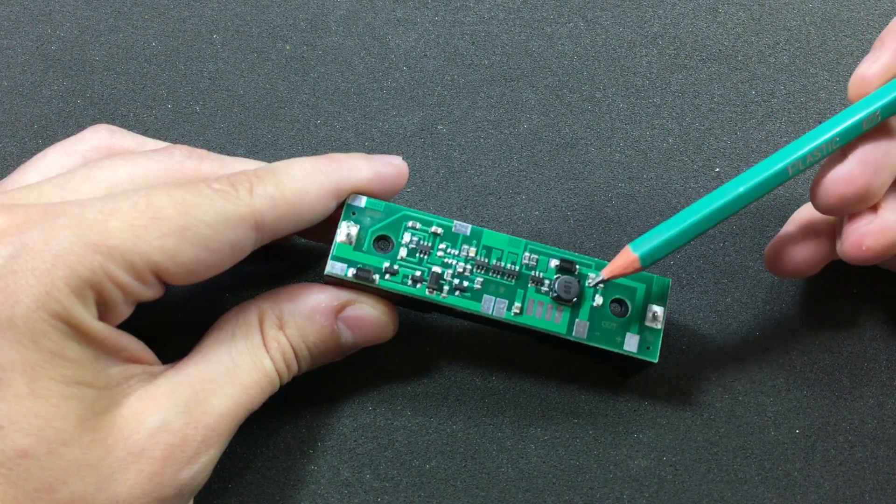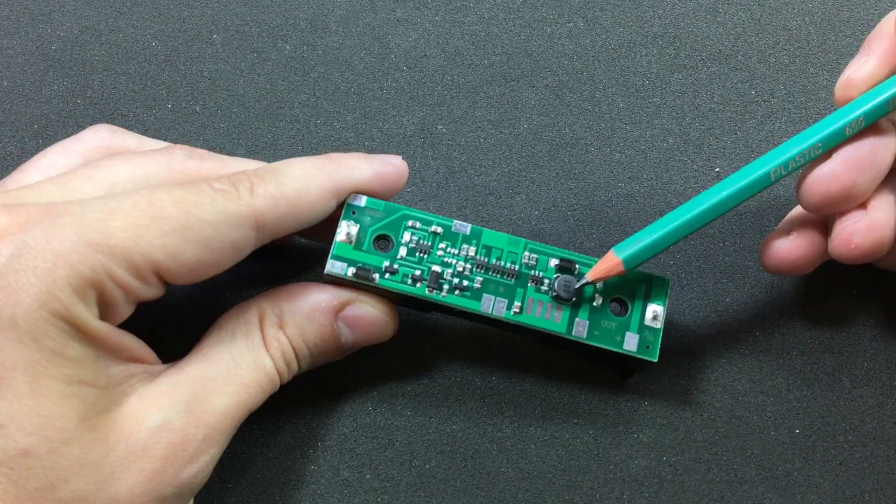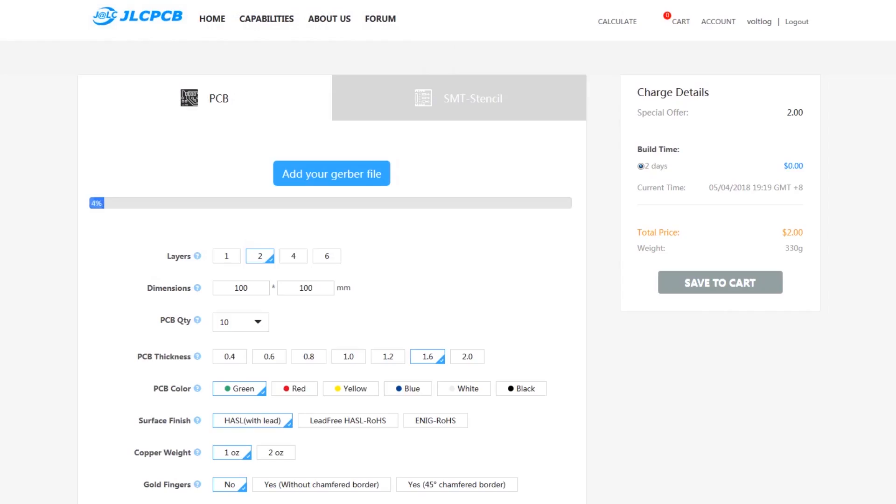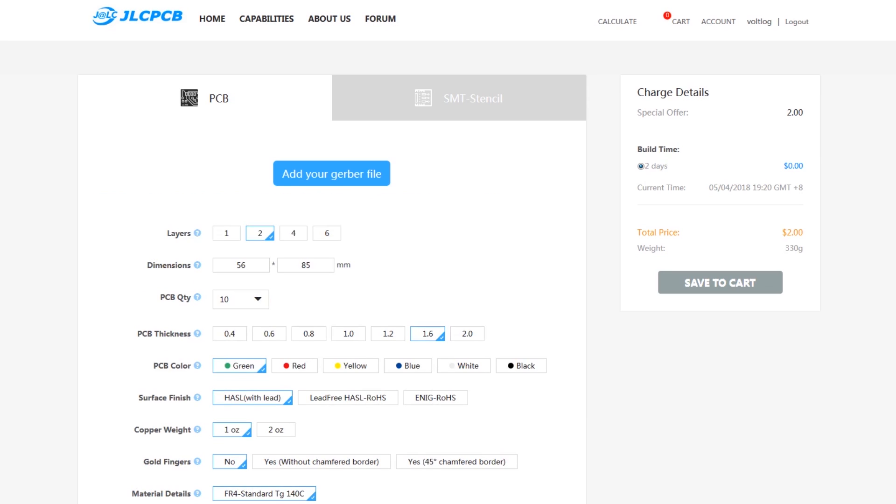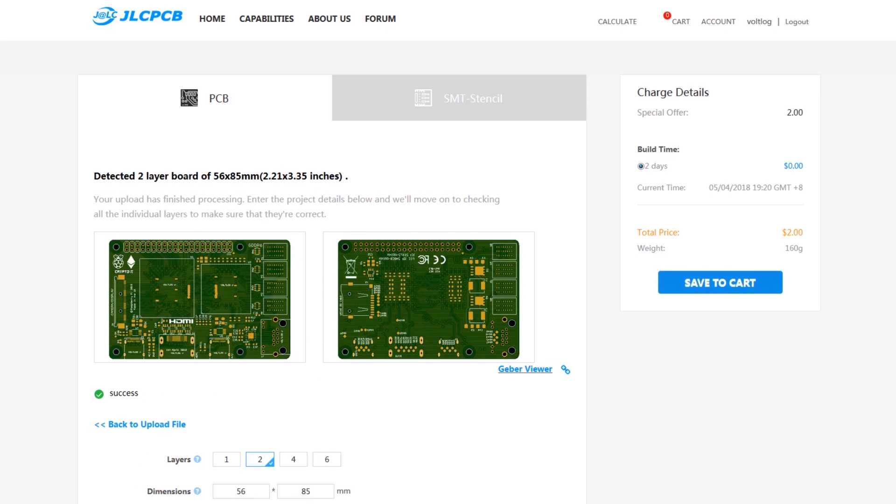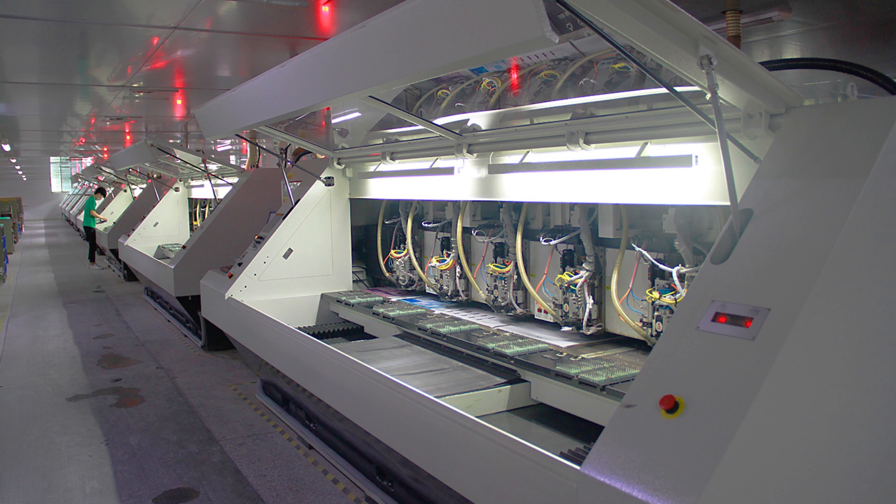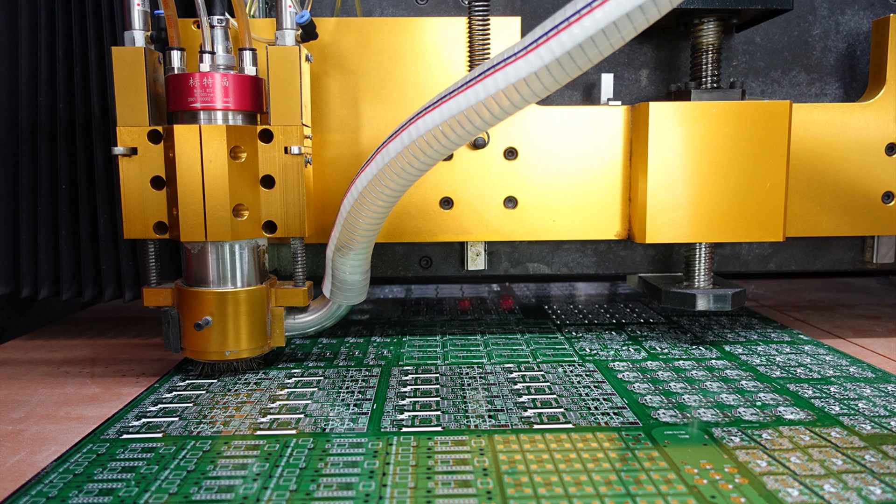The sponsor of this video is JLCPCB.com, a professional PCB factory which currently has the best offer on the market. You can order 10 PCBs for just $2, so check out their website linked in the description below because it will probably cost you more to do the PCBs at home.